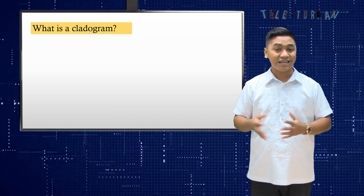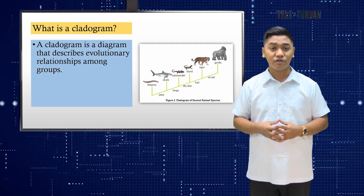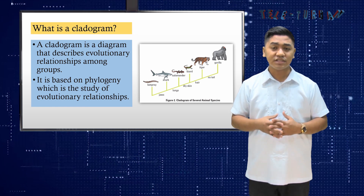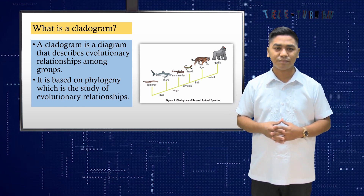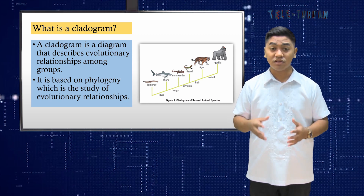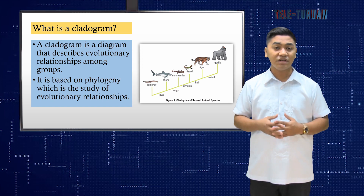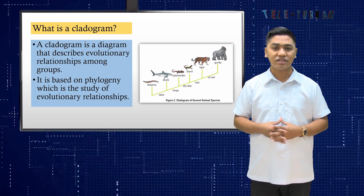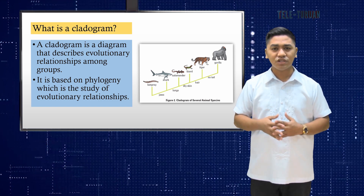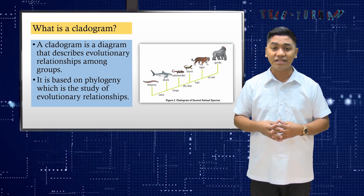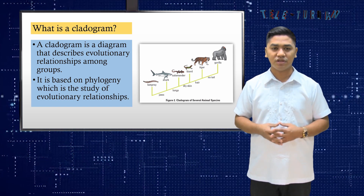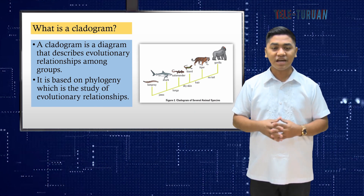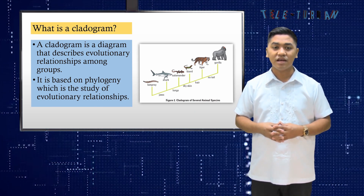What is a cladogram? A cladogram is a diagram that describes evolutionary relationships among groups. It is based on phylogeny, which is the study of evolutionary relationships. Sometimes a phylogenetic tree is also called a cladogram, though there are minor differences between these. Biologists group organisms based on their physical appearance. This strategy is called evolutionary classification, or cladistics, through advances in genetics and biochemistry. This form of analysis considers derived features that serve some kind of purpose — features that are considered innovations in organisms.